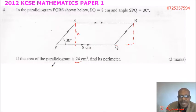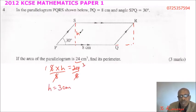So we can say the area is 8 multiplied by height, that should give you 24. So you divide both sides by 8, divide there you get 1, divide here you get 3, so our height is equal to 3 cm.